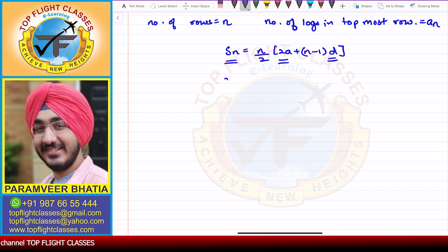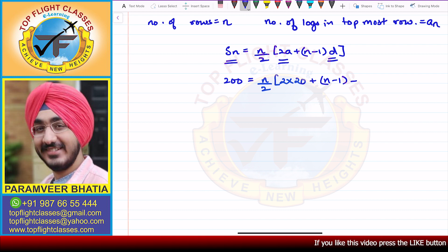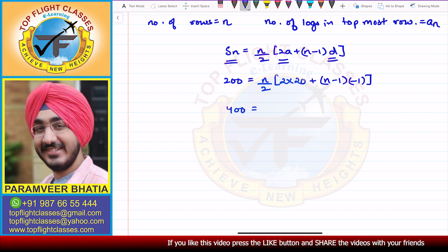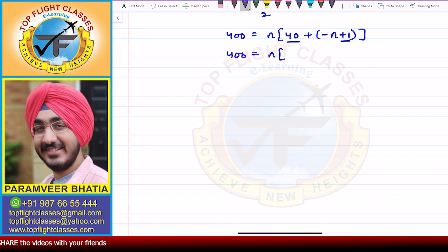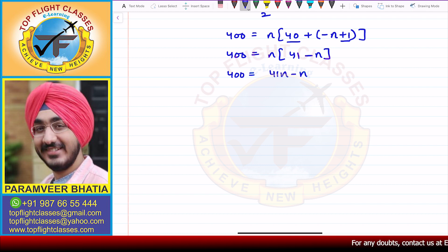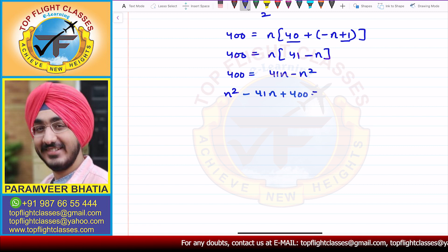Sₙ given is 200, equal to n by 2 times (2 into A, that is 20, plus (n minus 1) times D). Multiplying both sides, 200 into 2 gives 400, equal to n times (40 plus (n minus 1) times minus 1). Simplifying, 400 equals n times (41 minus n). Opening the brackets: 400 equals 41n minus n². Rearranging, n² minus 41n plus 400 equals 0.